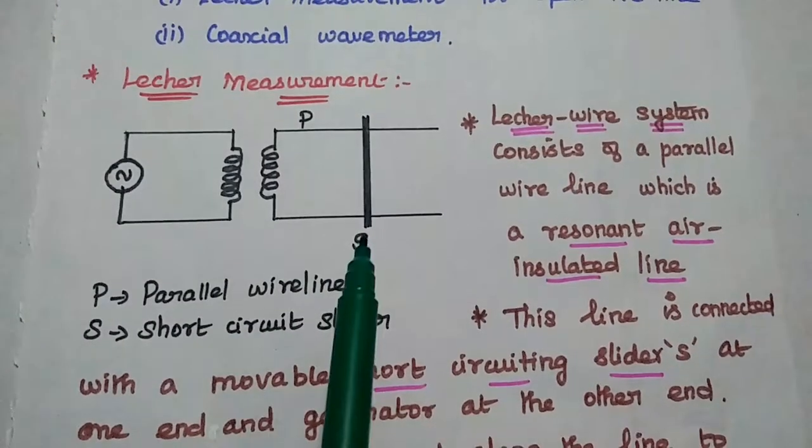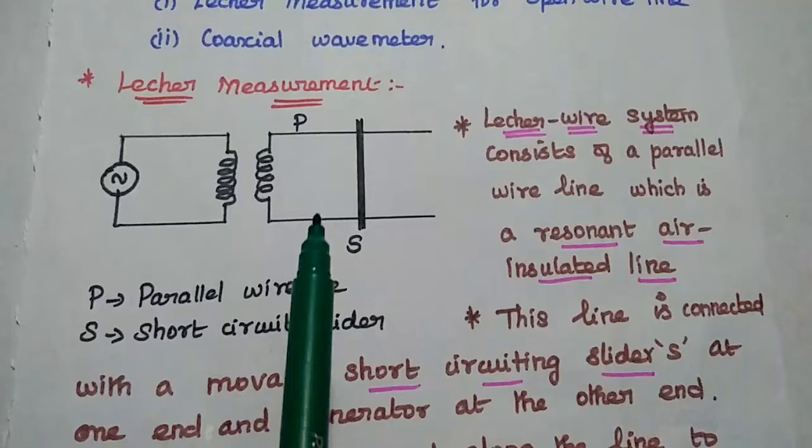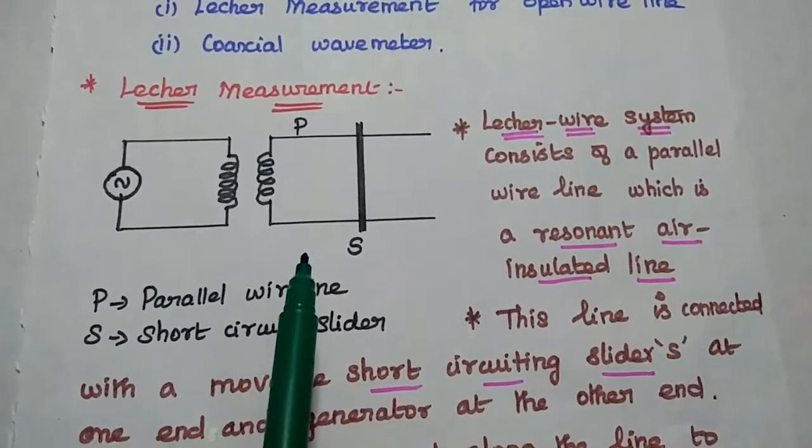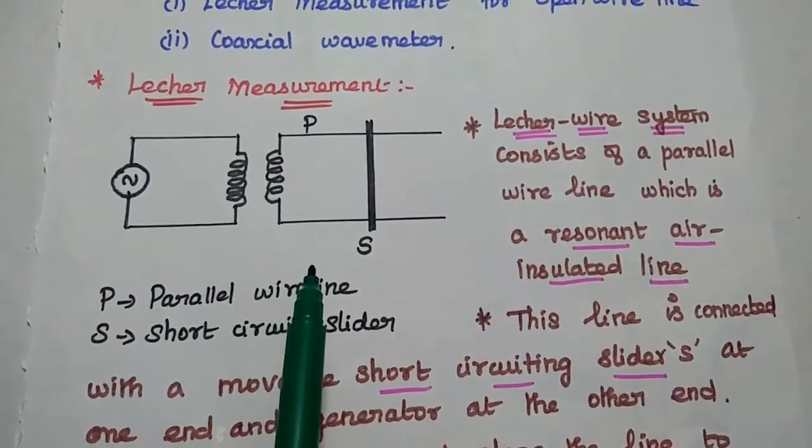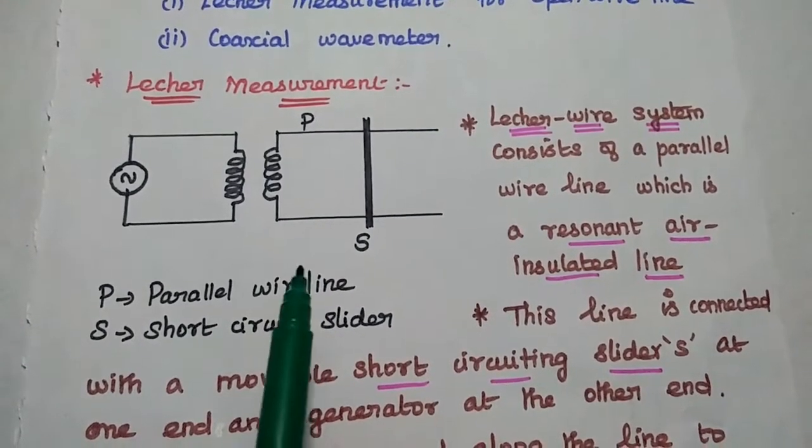Here, the slider is moving along the transmission line to measure the distance between two successive maximum voltage values. At maximum voltage, the line is resonant.